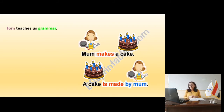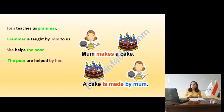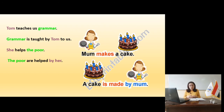Slide 11 — 'Tom teaches us grammar.' Tom is the subject, teaches is the verb, and we have two objects: us and grammar. So we can have two answers. Beginning with grammar: 'Grammar is taught by Tom to us.' Beginning with us — but we must change 'us' to 'we': 'We are taught grammar by Tom,' using 'are' because the subject is 'we' and the verb is in present simple.